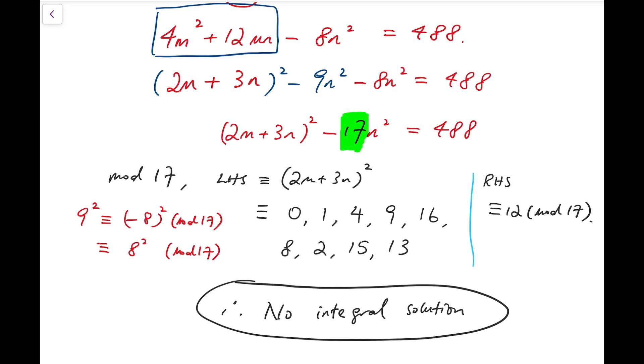Just a little remark at the end of the video is that this is actually what you were asked to prove in the original Putnam problem. You were actually asked to prove that equation has no integral solution, and the key is to consider mod 17. So this is the final conclusion, is that this equation has no integral solution.